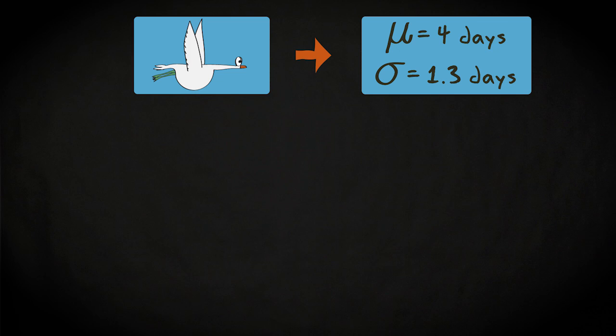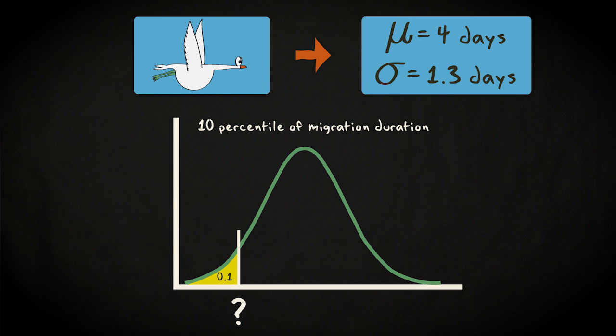It takes the geese on average 4 days to migrate, with a standard deviation of 1.3 days. You can then, for instance, find the 10th percentile of the migration duration. The 10th percentile of the duration means that it takes the geese this amount of time, or less, to migrate in 10% of the cases, and it takes them more time in 90% of the cases.